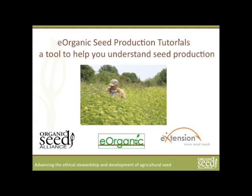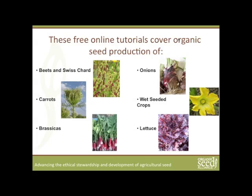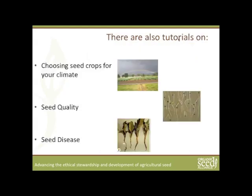The purpose of the organic seed production tutorials is to give you a tool to help you understand seed production. These tutorials were based on workshops at the 2011 Organicology Conference and are a function of a strong partnership of Organic Seed Alliance, eOrganic, and Cooperative Extension. These free tutorials cover organic seed production of beets and Swiss chard, carrots, brassicas such as radishes and cabbage, onions, wet-seeded crops like tomatoes and cucumbers, and lettuce. There are also tutorials on choosing appropriate seed crops for your climate, managing seed quality in organic seed production, and managing seed-borne diseases in organic seed production.